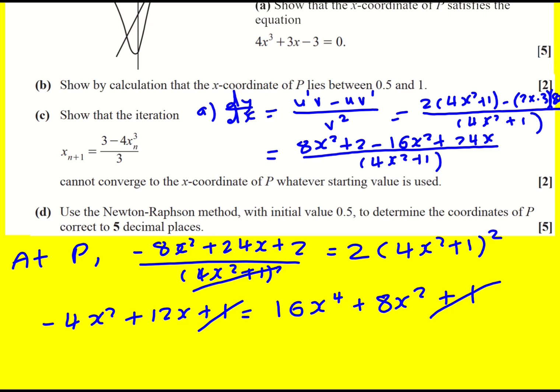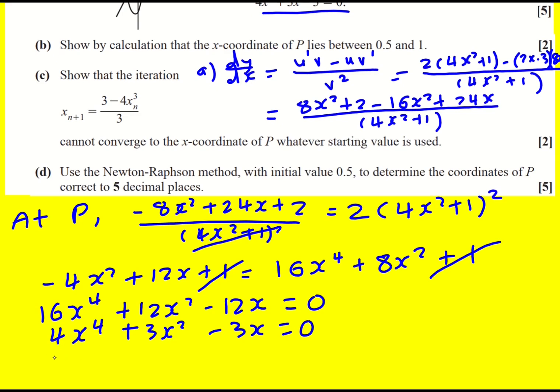The ones cancel. I'm trying to get to this. So 16x to the 4 plus 12x squared minus 12x equals 0. I can divide through by a constant. It's going to become 4x to the 4 plus 3x squared minus 3x equals 0. There's just an extra factor of x now. Divide by x since x not equal to 0 at P. Therefore, 4x to the 3 plus 3x minus 3 equals 0.